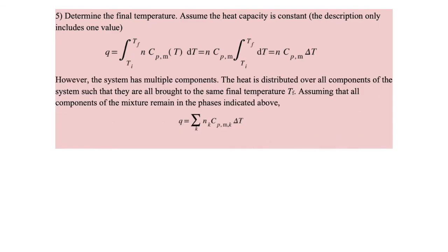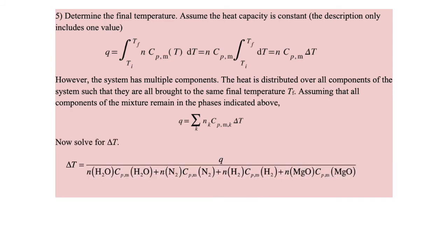However, we have multiple components in our system, and the heat is distributed over all of them. They have good thermal contact, so ΔT is the same for all components, but the number of moles and heat capacity differ for each. We sum over those. Solving for ΔT gives the heat absorbed by the components divided by the sum of moles times heat capacity.